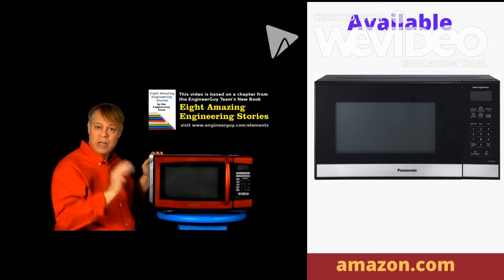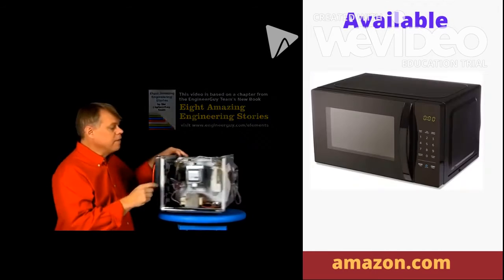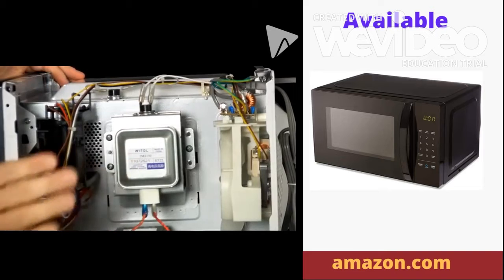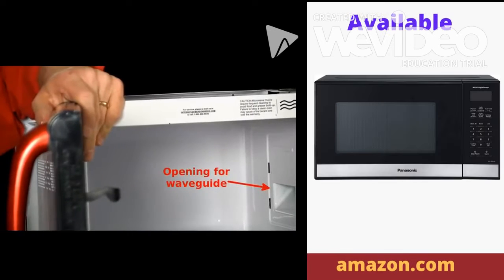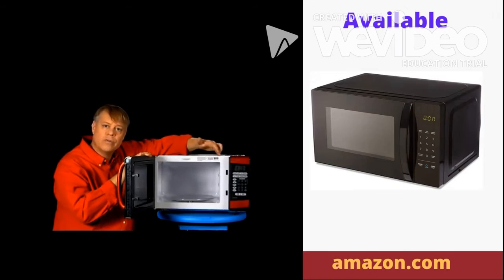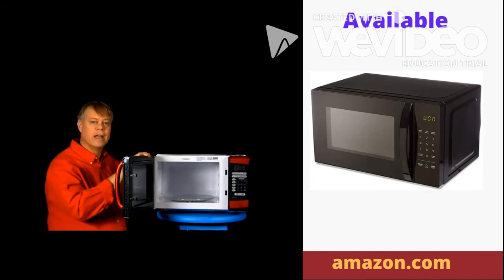A microwave contains three main components: a vacuum tube called a magnetron, it generates the energy that heats food; a wave guide hidden in the wall to direct that energy to the food; and a chamber to hold the food and safely contain the microwave radiation.